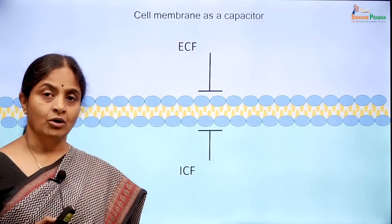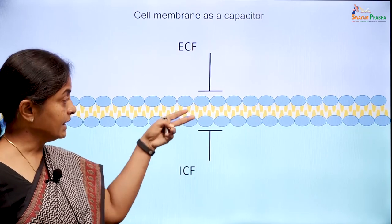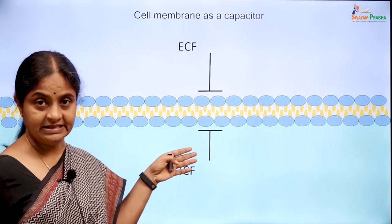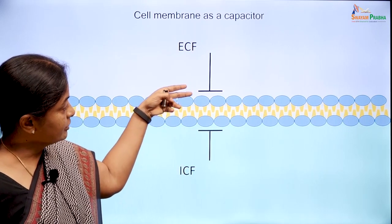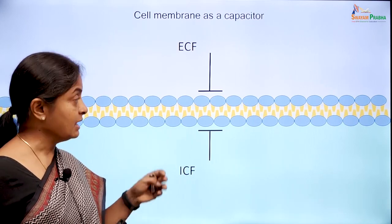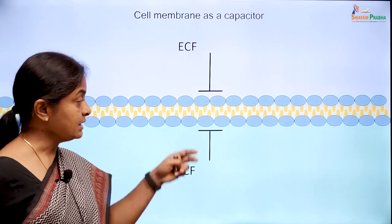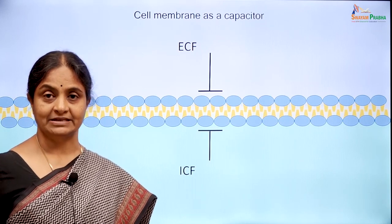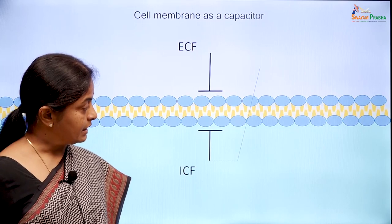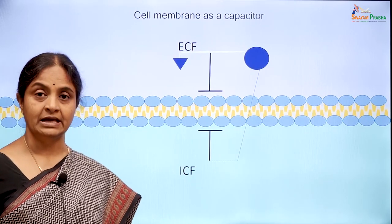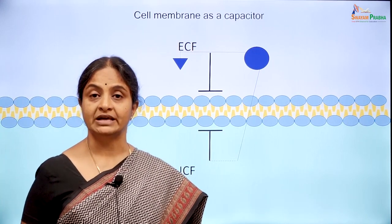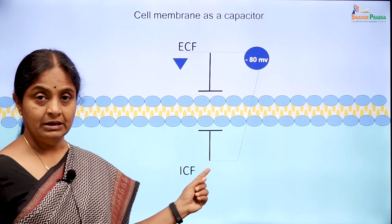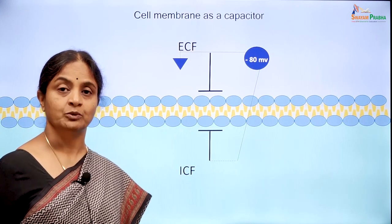The cell membrane also functions as an electrical capacitor because the lipids of the membrane form an insulating layer separating two electrolytes on either side. The layer of extracellular and intracellular fluids alongside the membrane can be thought of as parallel plates of this capacitor. The lipid itself is the insulating material in between, and it is a charged capacitor — if you put an electrode inside the cell and keep a reference electrode outside and measure the voltage across, it comes to about minus 80 millivolts, because the negativity is on the inside and the active electrode is placed within the cell.